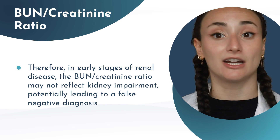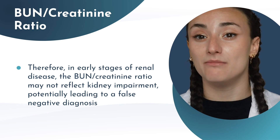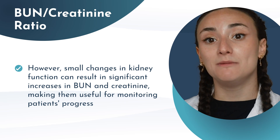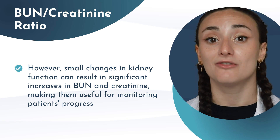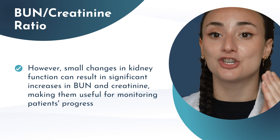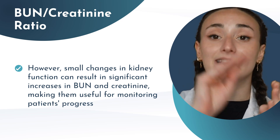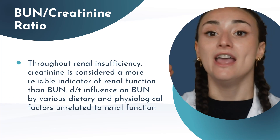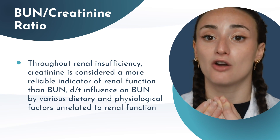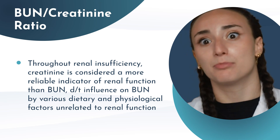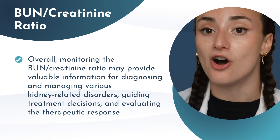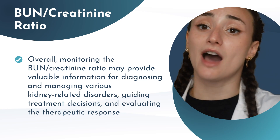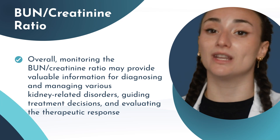So someone may be at 40% loss of function from baseline and not reflect changes in this ratio, even though they do need to be treated for kidney impairment — this can happen with early stages of renal failure, and we might get a false negative diagnosis if we rely solely on the BUN to creatinine ratio. However, once we breach that 50% threshold, further small changes in kidney function can lead to great changes in the ratio, making it very helpful for closely monitoring patient progress.